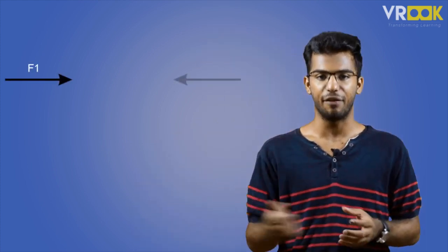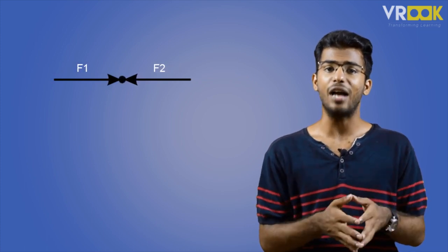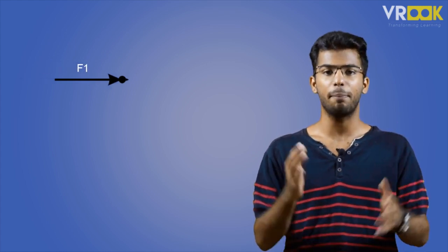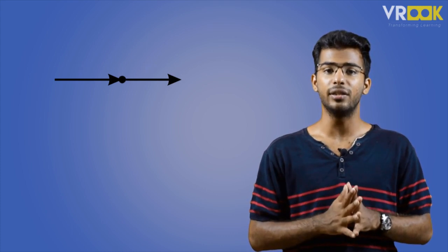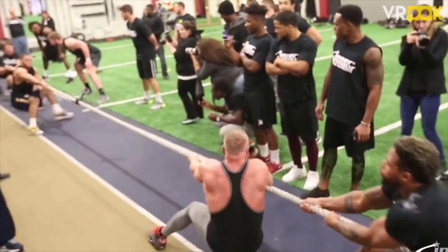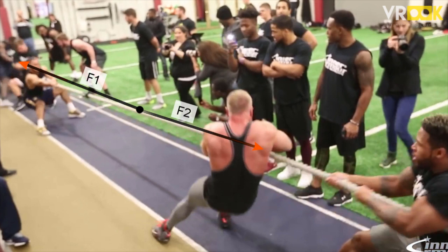Finally, we have the collinear force system. If the line of action of two or more forces coincides with one another, it is called a collinear force system. Suppose we have two forces F1 and F2 — if they coincide, their lines of action are along the same line, and their combined effect is F1 plus F2. The best example is a tug of war, where each opponent pulls the rope toward their end. We can locate a point on the rope where these two forces act along the same line — hence they are collinear.